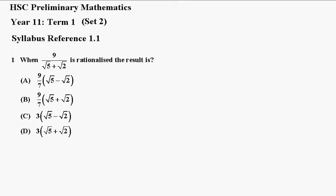Question 1 of Set 2: When 9 over root 5 plus root 2 is rationalized, the result is a, b, c, or d?